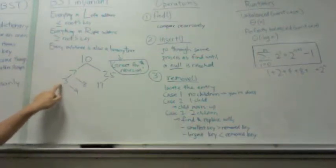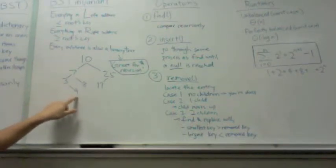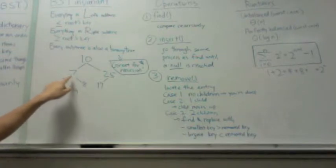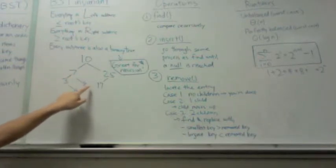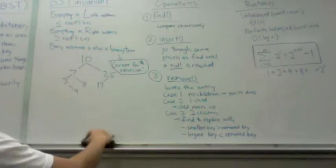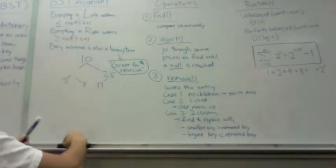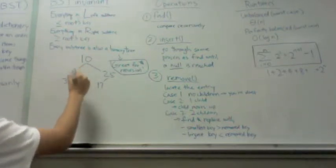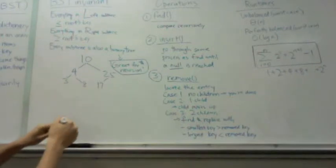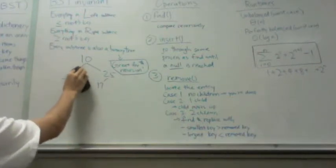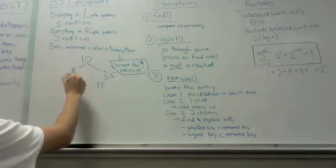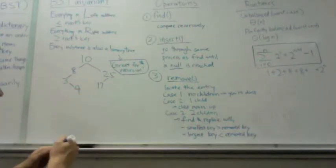sorry, with 4. 4 is the largest key less than 7 and 8 is the smallest key greater than 7. So your tree can either look like this and maintain the invariant or you can do this and still maintain the invariant.